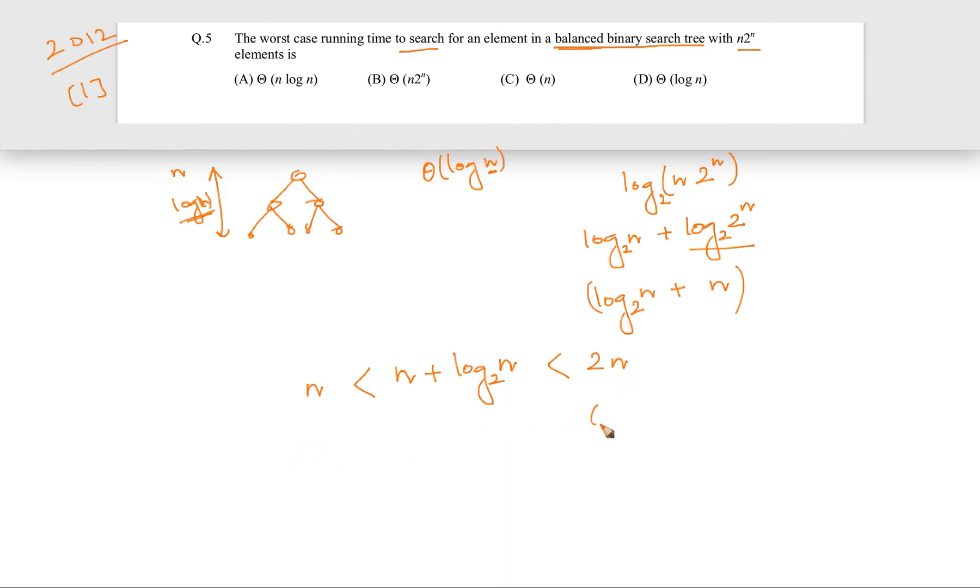My point is that it is also bounded on the upper side by n, that is why it is order n. And at the same time, it is also omega n because from the lower side also it is bounded by n. So overall, definitely we can say that theta n is our answer. So the answer is C: theta n.